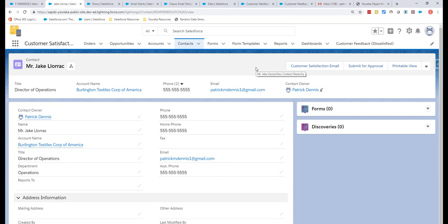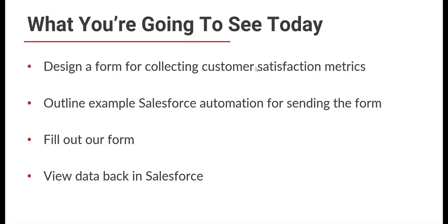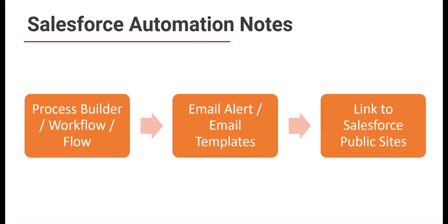Specifically, I'm going to use Flow to send an email template. If you're not familiar with Flow, don't get overwhelmed — I won't talk about it for very long. For those with a Salesforce administrator background, you'll recognize this. You could have this working off a Process Builder, a Workflow, or in this case a Flow with a manual action on the contact record. We'll use Salesforce email alerts and email templates to facilitate sending the message, and the email contains a link to the form.